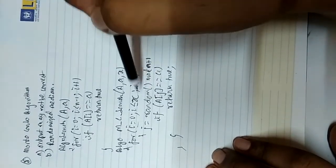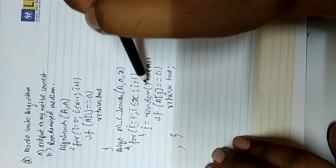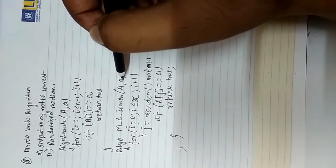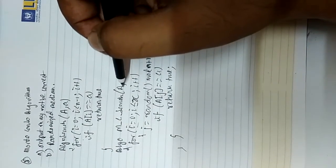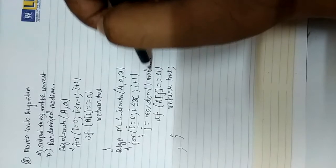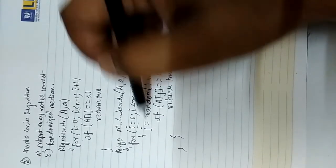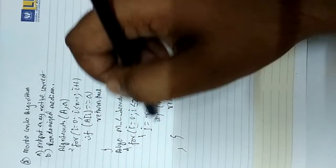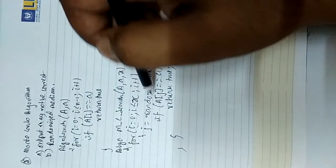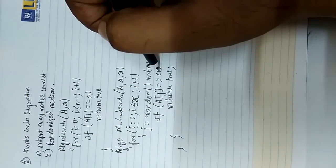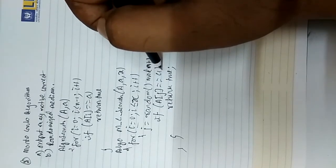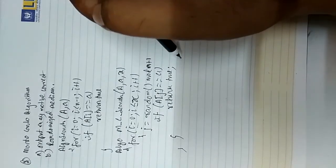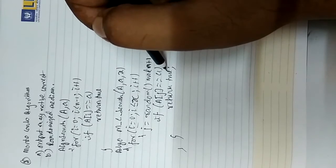This is using the random number. We generate a random number that gives an index j and we check whether the value at that index equals the given element. If it is found then it returns true, else it returns false. This is the Monte Carlo algorithm.